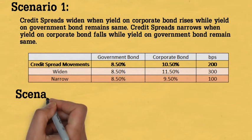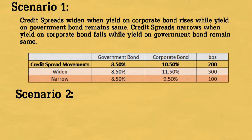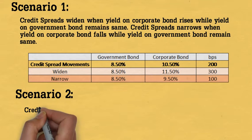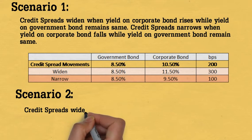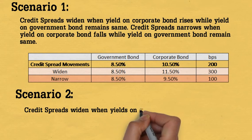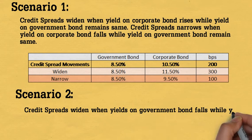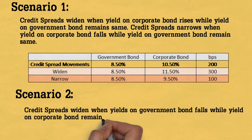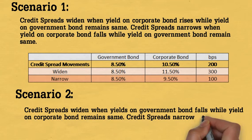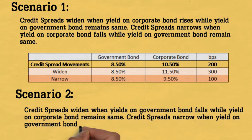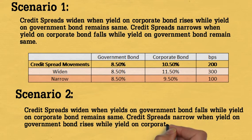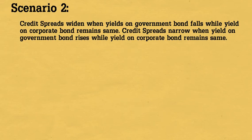Scenario 2. Credit spread widens when the yield on the government bond falls while the yield on the corporate bond remains the same. Credit spread narrows when the yield on the government bond rises while the yield on the corporate bond remains the same.